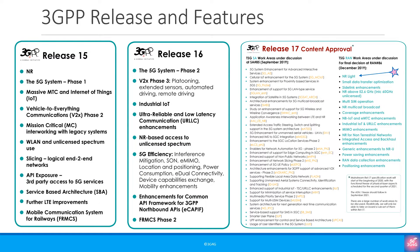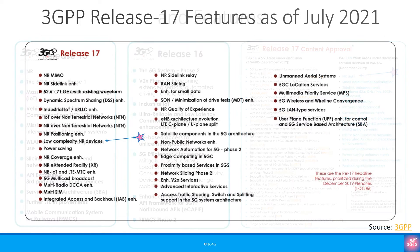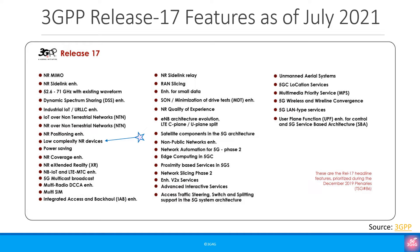This slide highlights the features released as part of Release 15 and 16. Release 17 content used to look like the earlier slide, where the flashing star highlighted NR Lite. Today, the 3GPP Release 17 features list highlights NR Reduced Capability, or low-complexity devices.